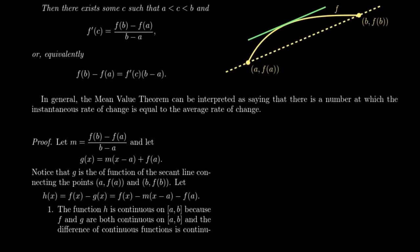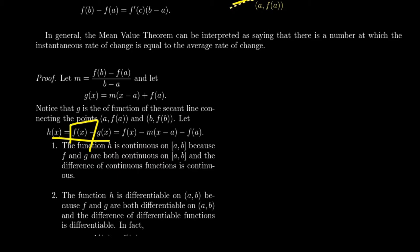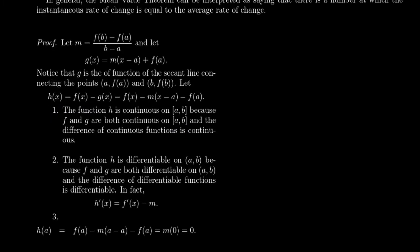Let's say the average rate of change is m — as in the slope of the secant line — and let g of x be that secant line: g of x equals m times x minus a plus f of a. So g of x is the secant line passing through a comma f of a and b comma f of b. Now consider the difference h of x equals f of x minus g of x. Since f is continuous and g is a line, h of x will also be continuous on a to b. Similarly, f is differentiable and g is a line, so h is differentiable on a to b.